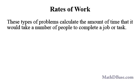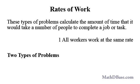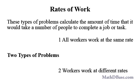Rates of work problems calculate the amount of time that it would take a number of people to complete a job or task. There are two basic types that we will look at. In the first, all workers work at the same rate, and in the second, workers work at different rates.